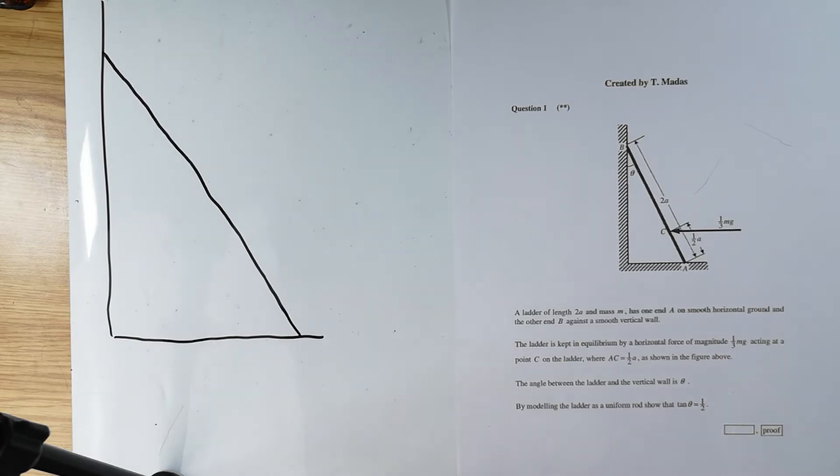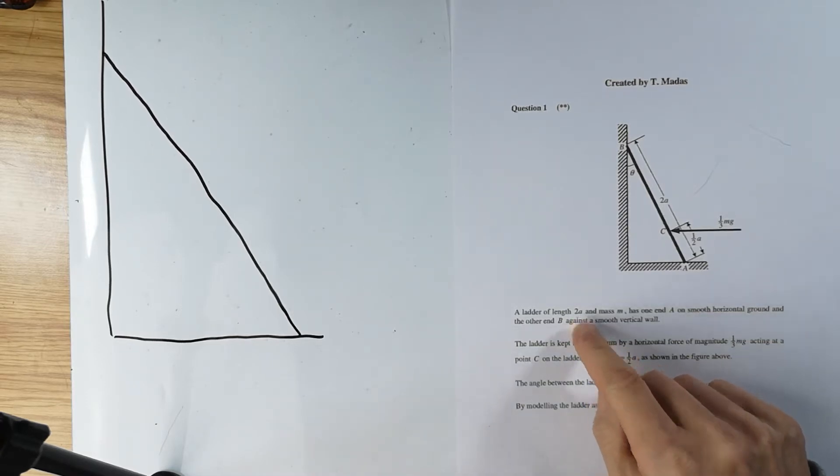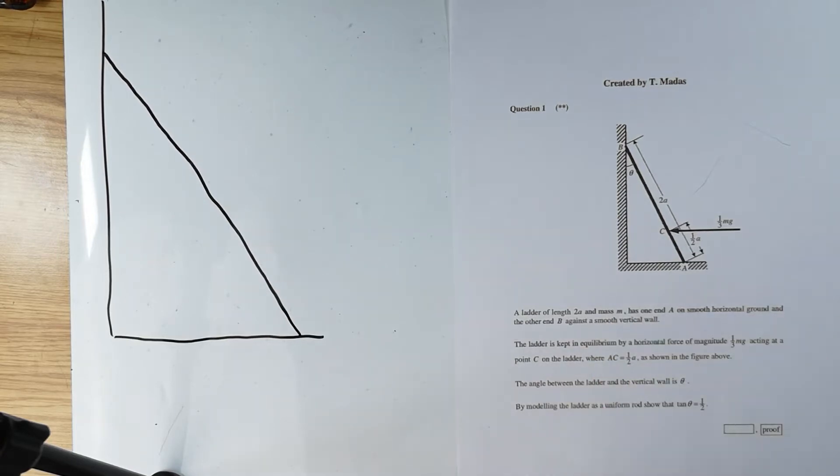I do advise my students to have a diagram which is roughly half of an A4 page. So you will need to annotate this particular diagram with a lot of different stuff. So if you draw it very small, you'll be hardly able to see what is going on. So this is now the ladder against the wall and I'm reading the question. A ladder of length 2A.